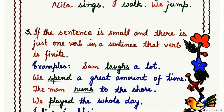Point number three: if the sentence is small and there is just one verb in a sentence, that verb is finite. Meaning, it is easy to point out the finite verb if the sentence is small and has only one verb.